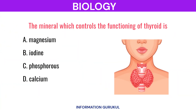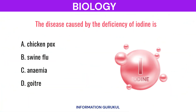The mineral which controls the functioning of the thyroid is Iodine. The disease caused by the deficiency of iodine is Goiter.